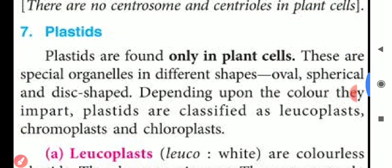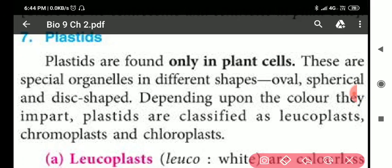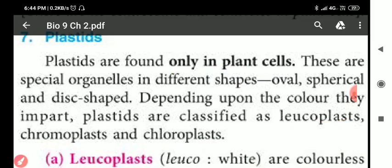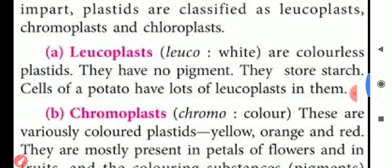Next, we will discuss plastics. Plastics are present only in plant cells. They can be classified into three types: leukoplasts, chromoplasts, and chloroplasts.